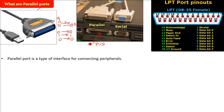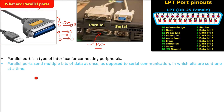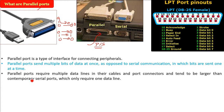The parallel port is a type of interface for connecting peripheral devices. Computers need a keyboard, mouse, printer, and other peripherals to function — these are resources. Parallel ports send multiple bits of data at the same time, as opposed to serial communication where bits are sent one at a time. Because multiple bits are sent simultaneously, parallel ports require multiple data lines.